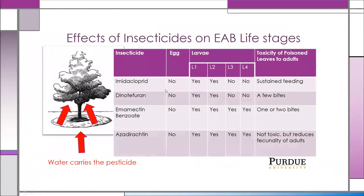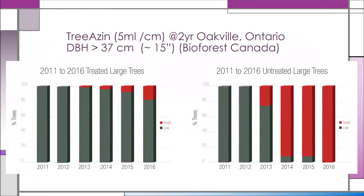There are a number of other products: imidacloprid and dinotefuran are the neonicotinoids. None of these products kill the eggs; all products kill first and second instars, but imidacloprid and dinotefuran do not touch third and fourth instars. Emamectin benzoate is the most toxic to adults. Azadirachtin works differently — it's not toxic but reduces the quantity of adults. In a study in Oakville, Ontario on about 15-inch diameter trees, by 2016 most bars were red, suggesting strong protection when trees are treated prior to infestation.